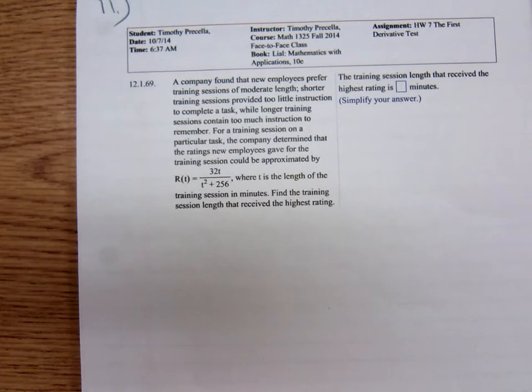Okay, here we go. This is Timothy Bricella again working some word problems using the first derivative test of my Math 1325 class. Here's the problem: the company found that new employees prefer training sessions of moderate length. Shorter training sessions provided too little instruction to complete the task, while longer training sessions contain too much instruction to remember.